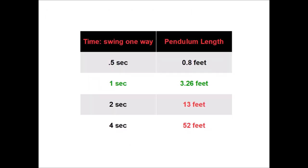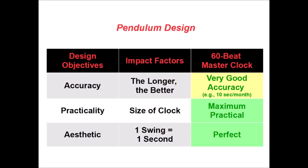By comparison, a two-second swing would require a 13-foot Pendulum and a four-second, a 52-foot Pendulum. So a one-second swing would require a 39-inch Pendulum, which provides good accuracy at a maximum practical length.